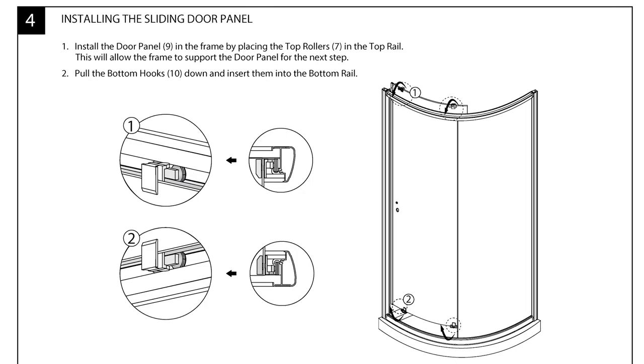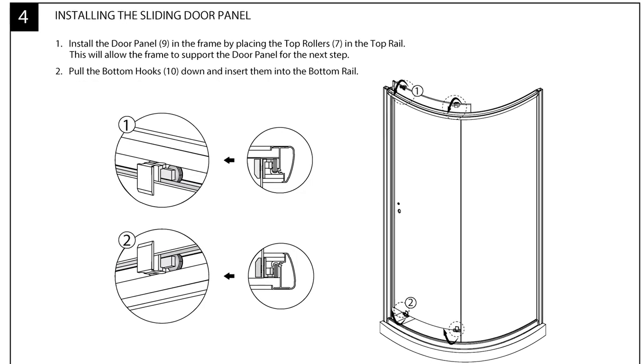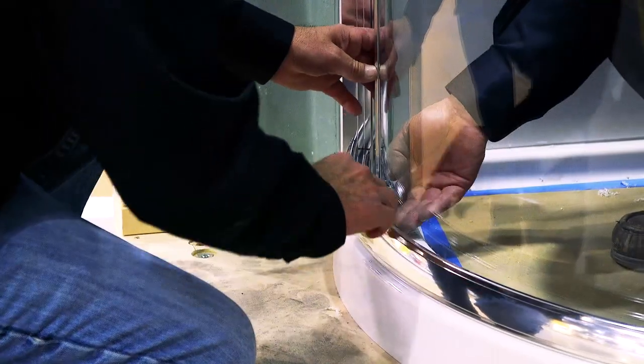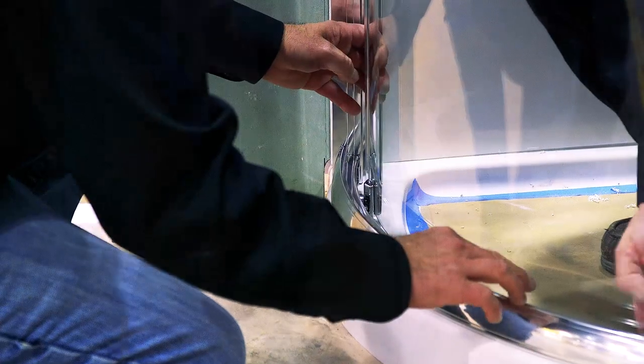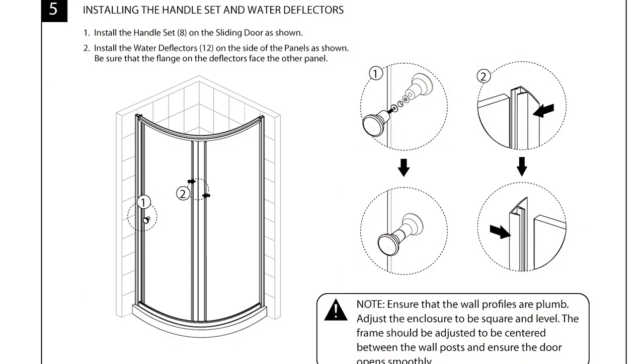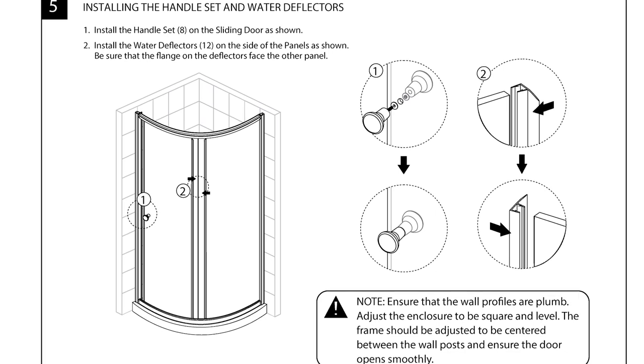Section 4: installing the sliding door panel into the frame. Place the top rollers in the top horizontal rail. The next step is to pull the bottom hooks down and insert them into the bottom rail. Install the knob handle set on the sliding door panel as shown here.